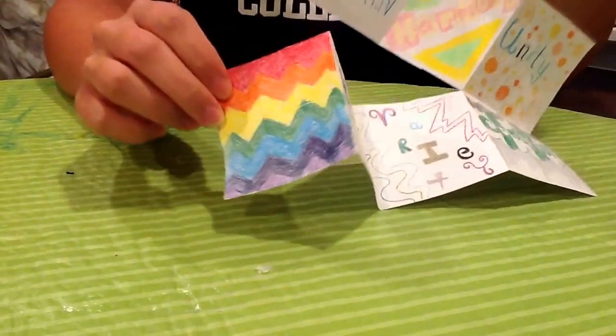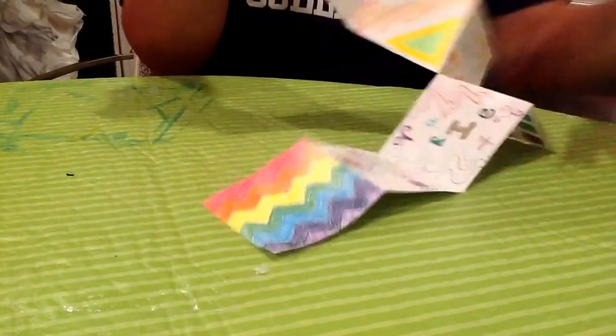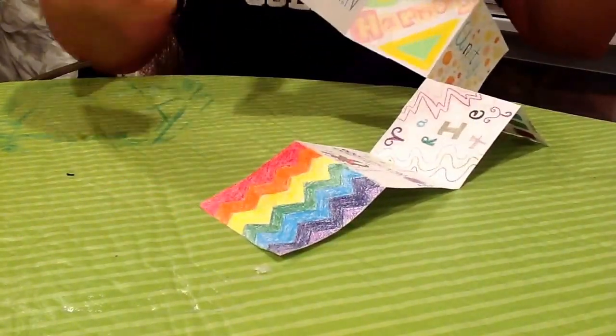And this book gets its name, the Ox Plow, from the way that the paper is cut. It creates kind of a zig-zag pattern in the way that an ox would plow a field.